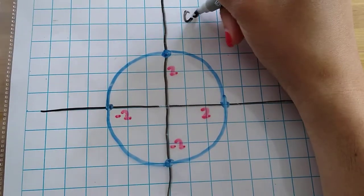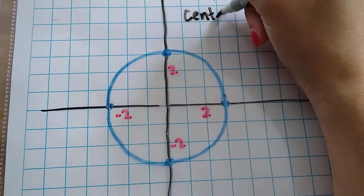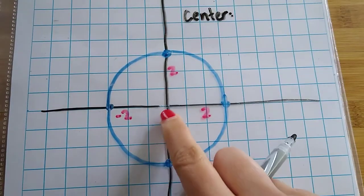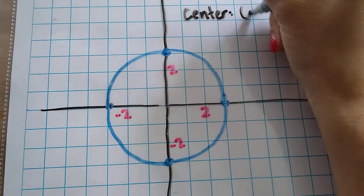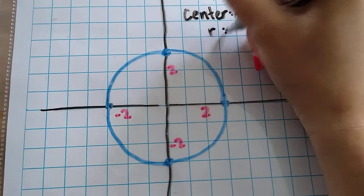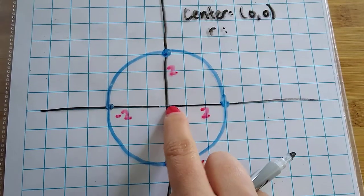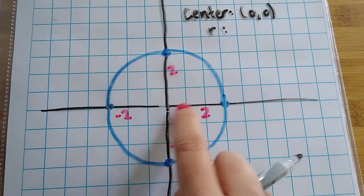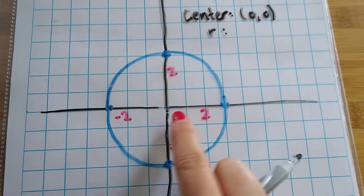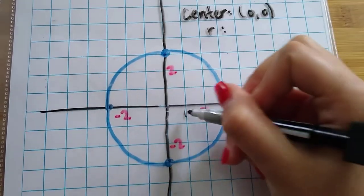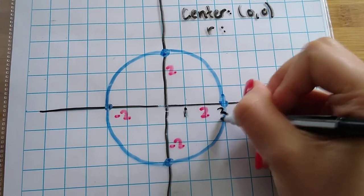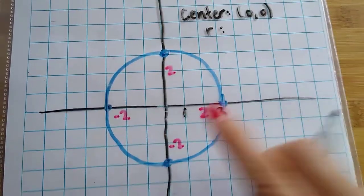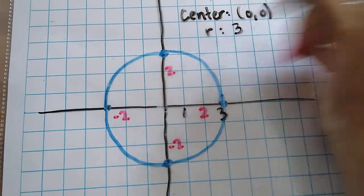So here, the center is at the origin, so it's at (0, 0). And the radius is from here, the point of the origin to a point on the circle. So this is 1, 2, and 3, and same for all of these points. So the radius is 3.